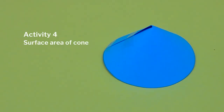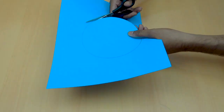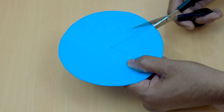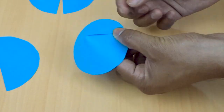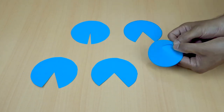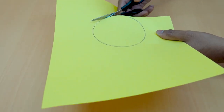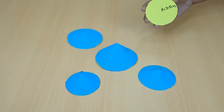I showed students an ice cream cone and told them to think about how they could find out its surface area. For Activity 4, surface area of a cone. Materials required are colored paper, scissors, and glue. Cut a circle from an A4 sheet, cut a triangle and make flaps, then stick the triangular flaps together. Now cut the cone along its height — what you get is a sector, and each time you can add a circle cutout at the base to find the surface area of the cone.